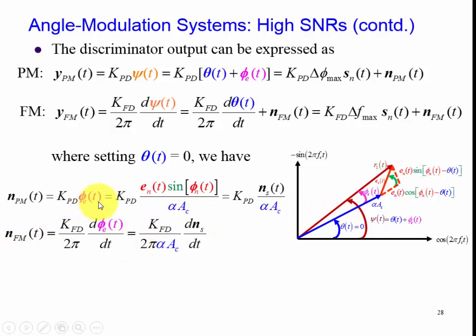For the frequency modulated case, we take the derivative of our noise error divided by two pi to get it in hertz. So we can multiply this K_FD as volts per hertz, and so this overall term is volts.